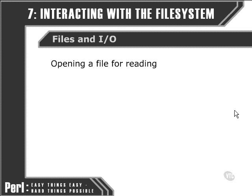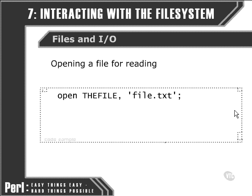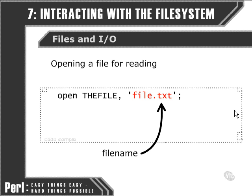First of all, let's look at how we open up a file and read its contents. The open function allows us to do this. The first argument that we supply to the open function is the name of a file handle. This name can be whatever we want. It's conventional to use all capitals, and that separates it from other kinds of elements, such as variables or function names, packages, and so on. So we name our file handle, and then as a second argument, we provide the name of the file in the file system that we're using the file handle as a reference to.